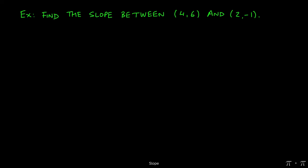Let's say we're asked to find the slope of the line between 4 comma 6 and 2 comma negative 1. We can assign 2 comma negative 1 to be the first point, x1 comma y1.